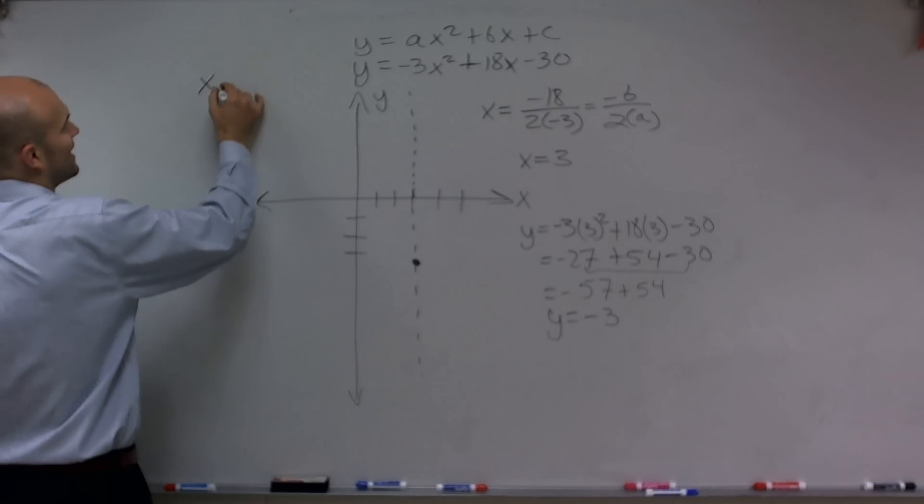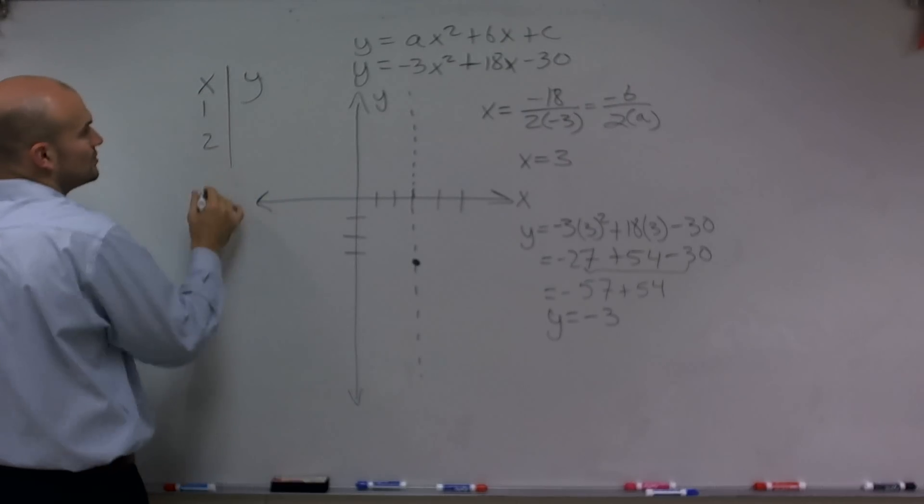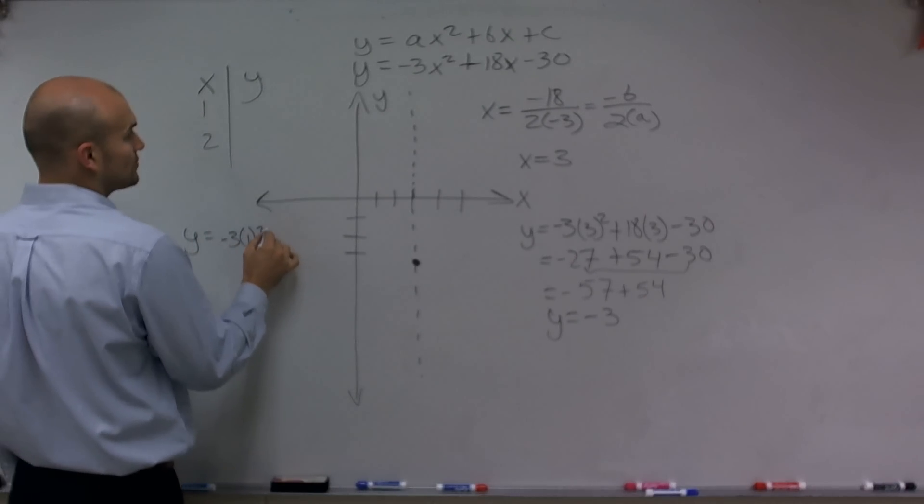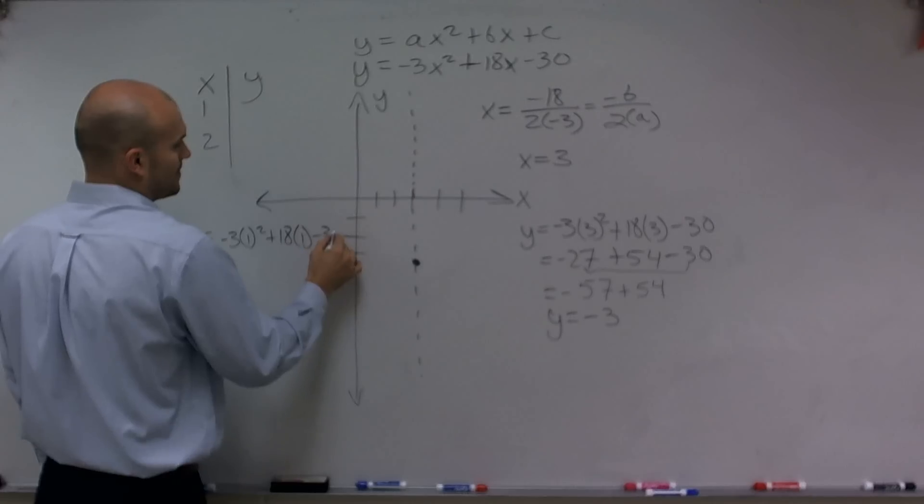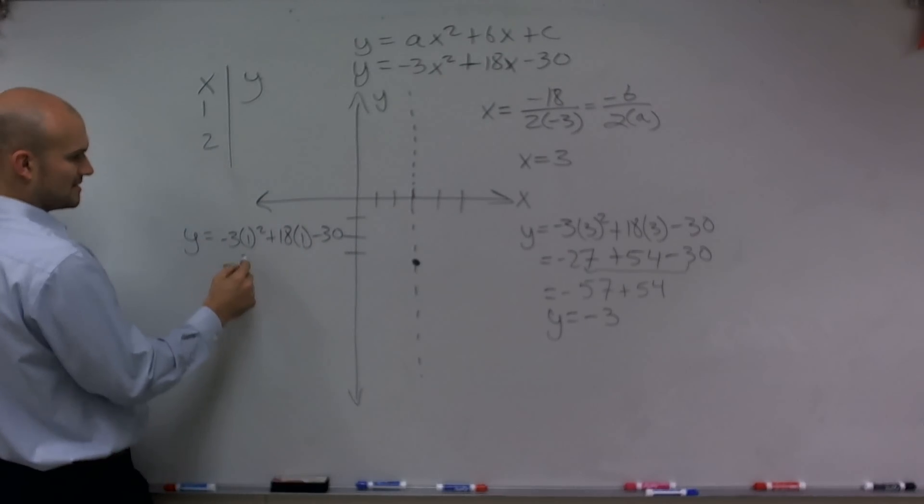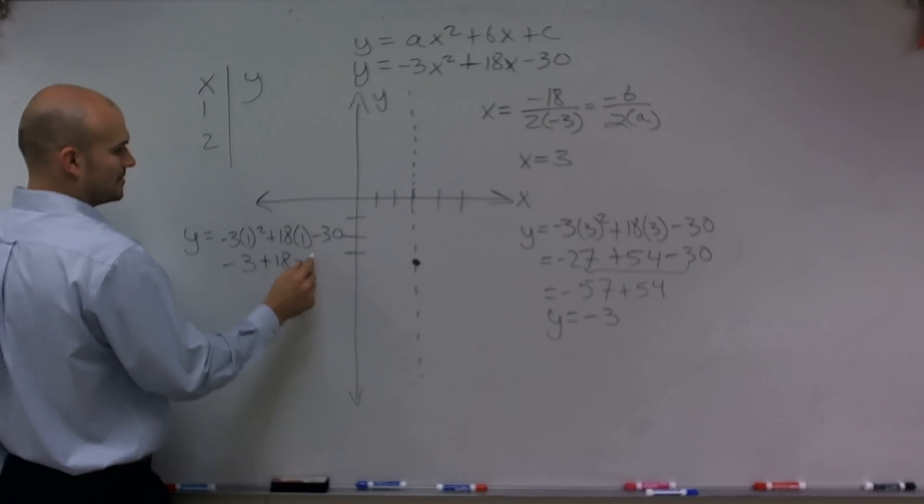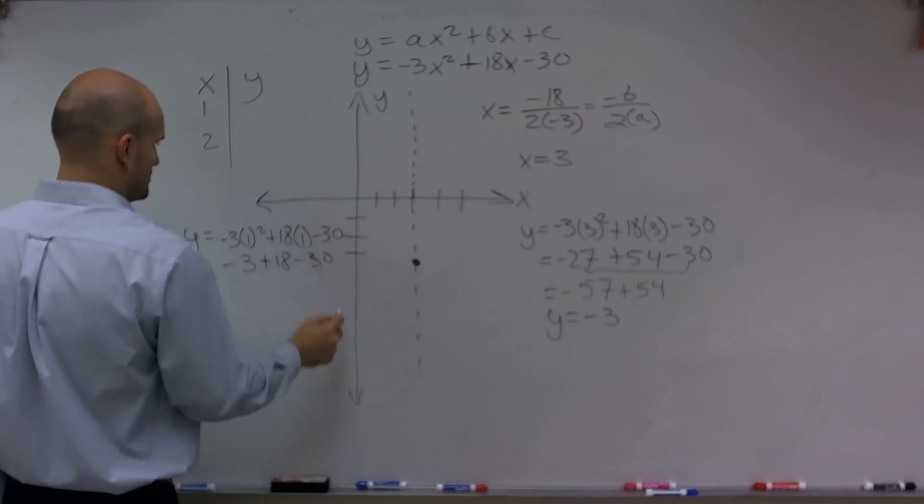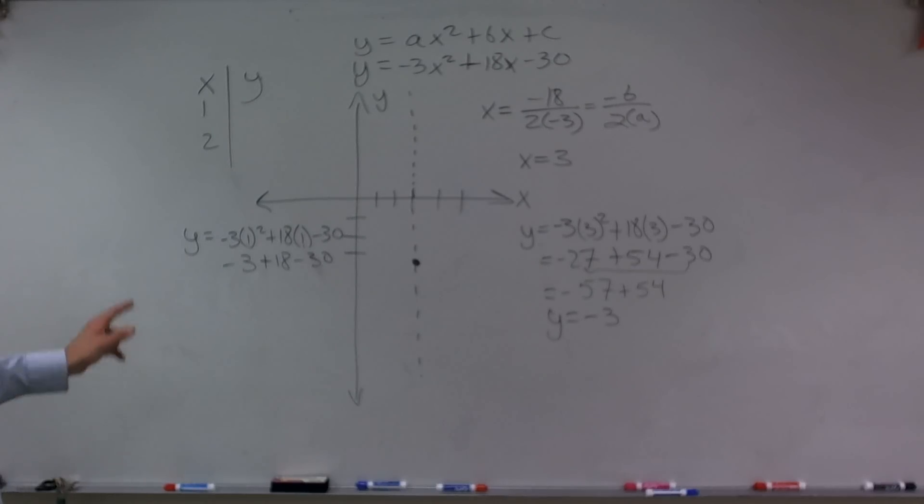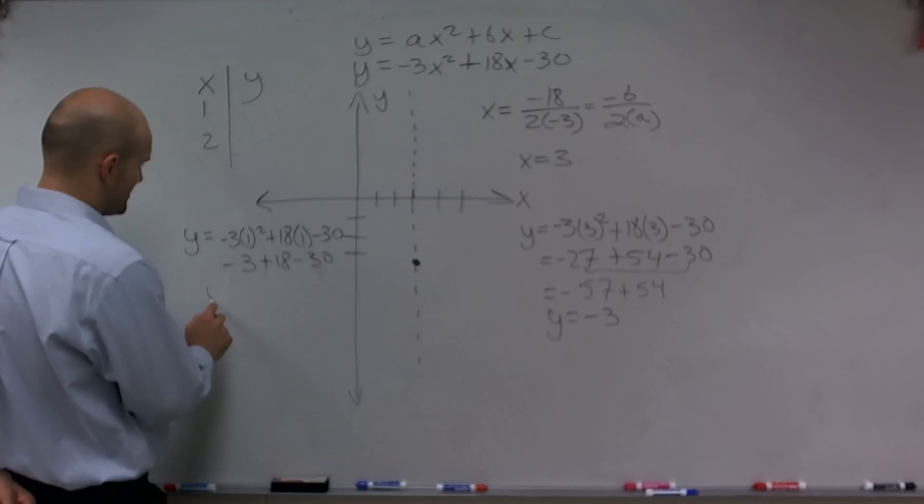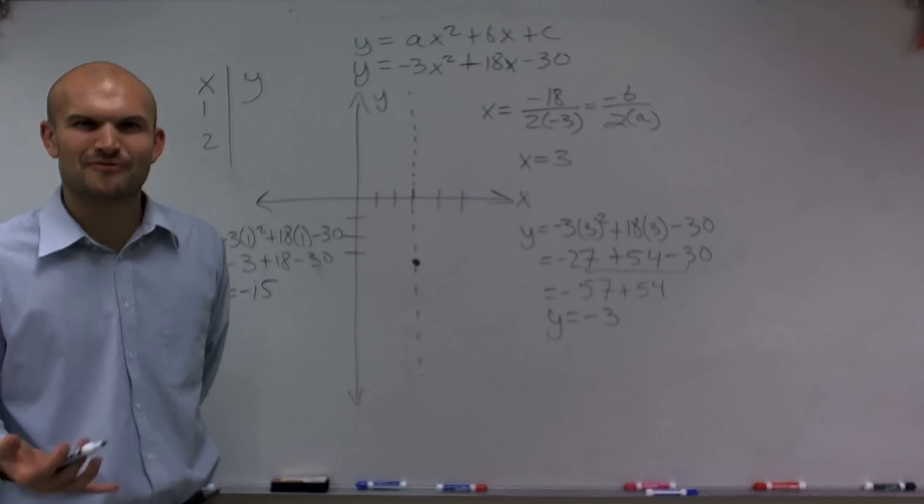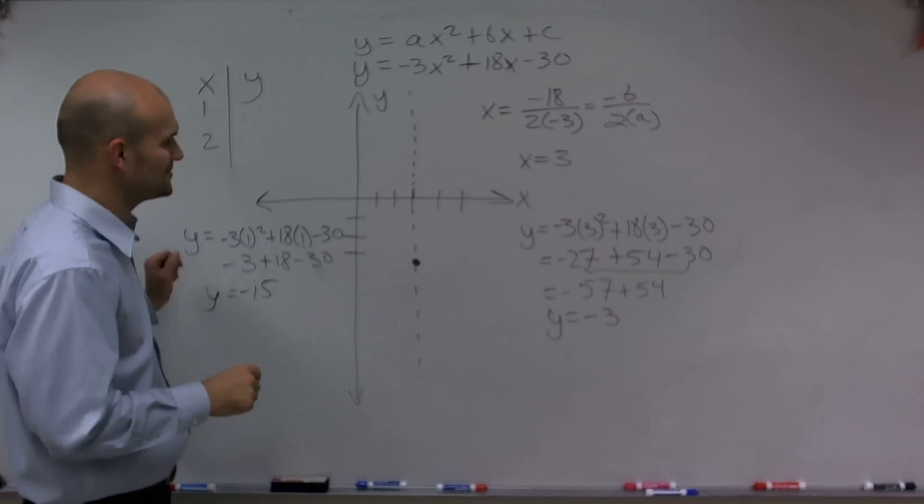Seems all right. So I'm going to say x, y, and let's determine what 1 and 2 are. So y equals negative 3 times 1 squared plus 18 times 1 minus 30. Well, that becomes negative 3 plus 18 minus 30. So I get y equals negative 15.